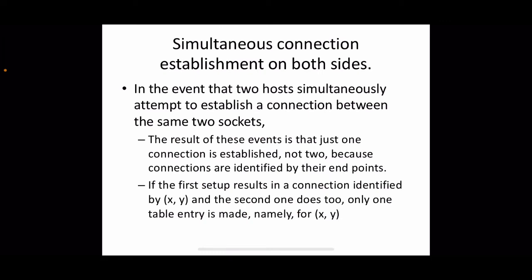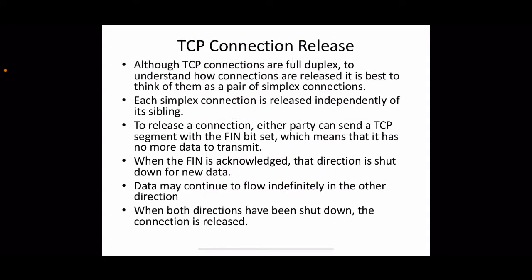If two machines on both sides of a connection both try to establish a connection simultaneously, the result is that just one connection is established, not two. This is because connections are identified by their endpoints. If the first attempt results in a connection identified by sockets (x, y), and the second also uses (x, y), only one table entry is made. A socket is the IP address and port together, and the same pair is used for that particular connection.